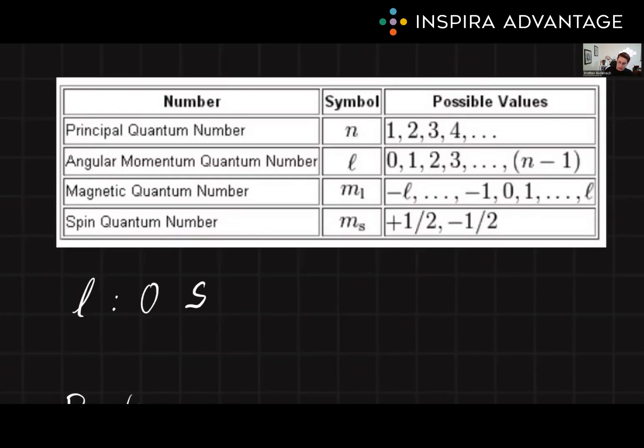And each of these values is going to correspond to a different orbital type. Example, zero is S, one is P, two is D, three is F, so on and so forth.